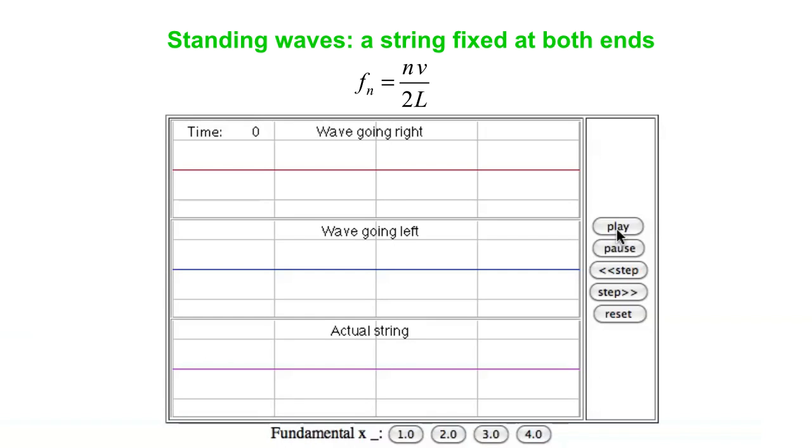We'll see how this is built up. Here we have the wave traveling to the right, and the net wave on the string is shown at the bottom. This wave is going to hit the end, which is a fixed end, and it's going to come back upside down.